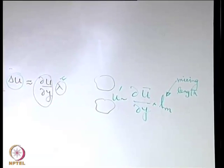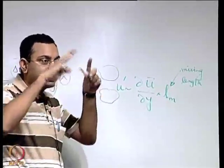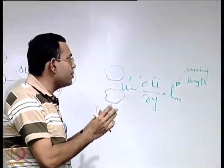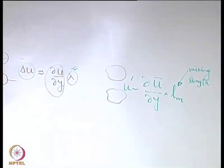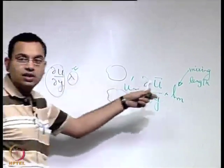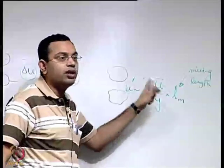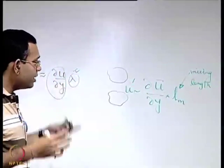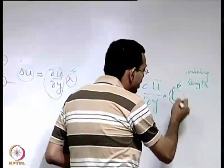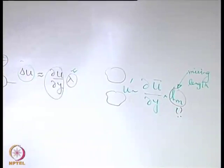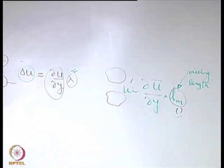Good physics does not always require representing reality exactly, but rather creating a physical picture and developing simple mathematics to represent an equivalent reality — that is what Prandtl tried to do. This is a very simplistic approach; Prandtl never had a precise value for the mixing length, and it is not as straightforward as the molecular mean free path for gas molecules.